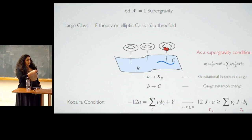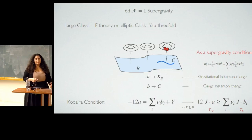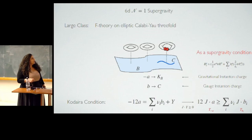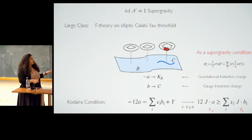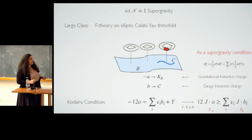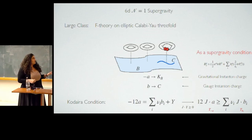One can wonder whether this Kodaira condition has a supergravity interpretation. From supergravity, these charges are gravitational instanton charges and gauge instanton charges. You can wonder if some similar relation holds — where J is either the Kähler class if you're doing Calabi-Yau, or the scalars in the tensor multiplet if you're just doing supergravity, giving you the tensions of the strings. Actually in eight dimensions, such a condition was shown to be satisfied from the bottom up. So one could wonder whether there's some kind of conservation of instanton charge in a gravity theory.